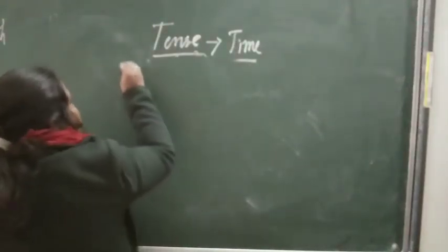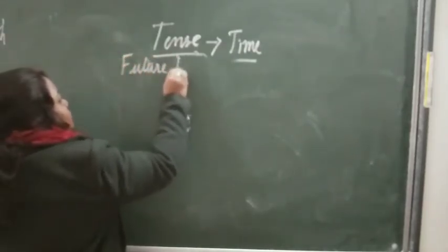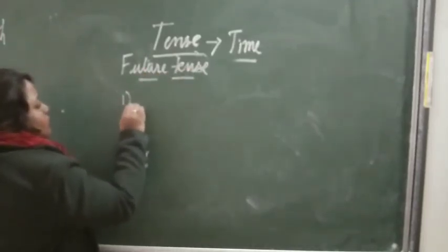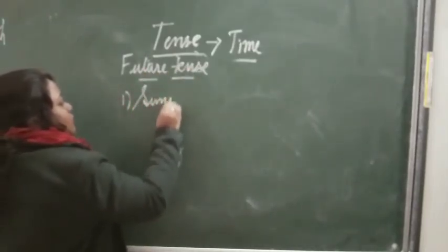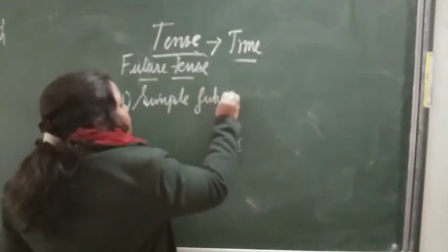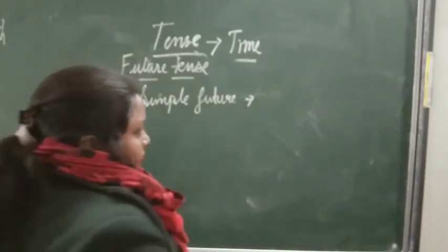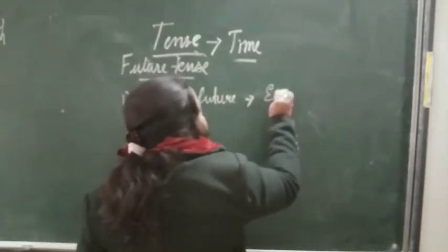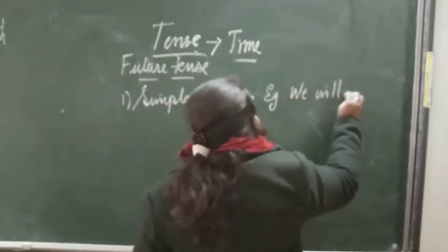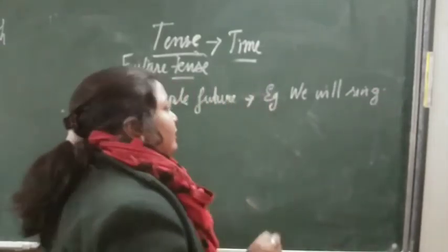Third is future days. Simple future. Example: we will save, we will sing, we will dance, whatever.